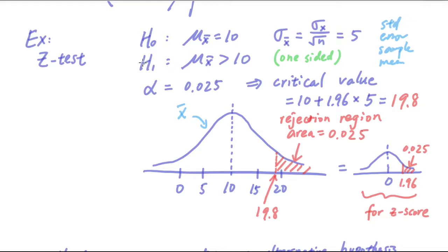And for the alternative hypothesis, we have the mean of x bar is greater than 10. So this is going to be a one-sided test. And we also decided that the significance level alpha is 0.025.